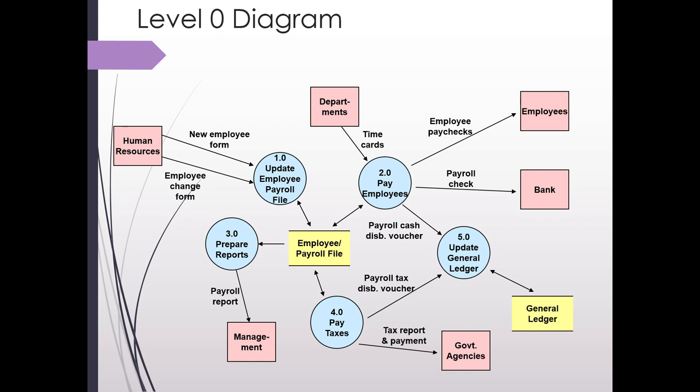With level zero we can see that we've added more transformation circles. We have also added data stores, which were not in the context diagram, and our transformation processes are now numbered. We still have our two data sources — Human Resources and Departments — and our four data destinations: employees, the bank, government agencies, and management. The first big difference is that we take the one circle from the context diagram and break it into multiple steps — in this case, five steps to process payroll.